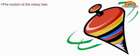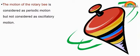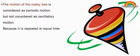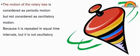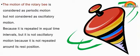The motion of the rotary bee is considered periodic motion but not oscillatory motion. It is repeated in equal time intervals, but is not oscillatory because it is not repeated around its rest position.